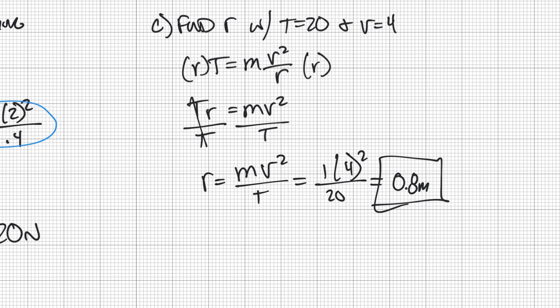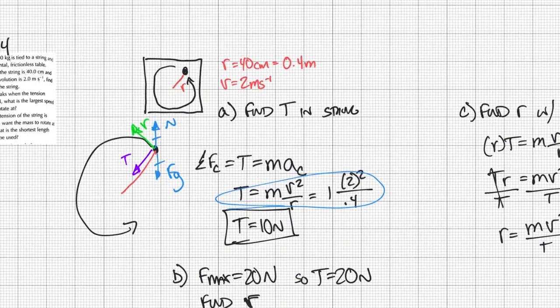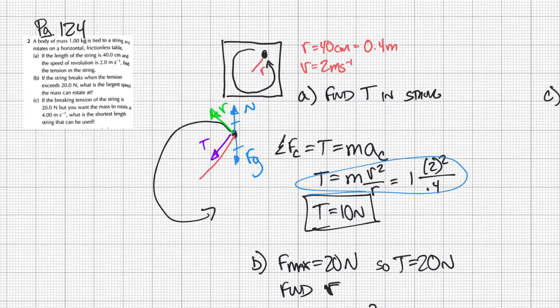All right, so just some good practice. And again, this is my setup where tension is my centripetal force. And so then I can set it equal to mass times acceleration centripetal. And just use that conversion of v squared over r to solve anything related with any of those variables.